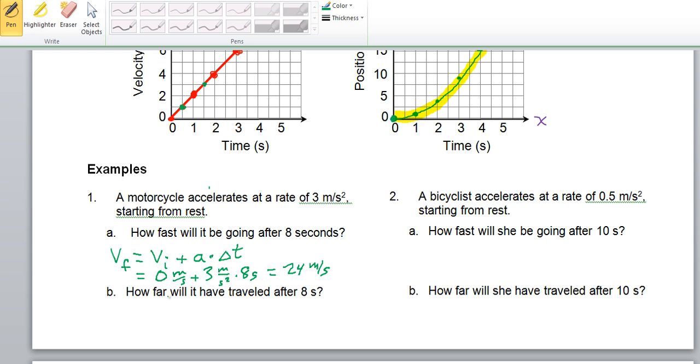How far will it have traveled after eight seconds? Here's where we're going to use the formula that we wrote above. The displacement of something that is accelerating from rest equals one-half times the rate of acceleration times time of accelerating squared. So, it's going to be one-half times three meters per second squared times eight seconds squared.